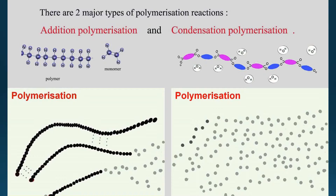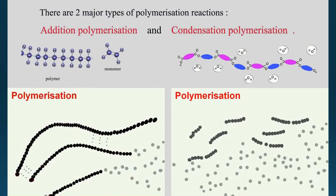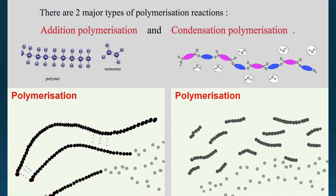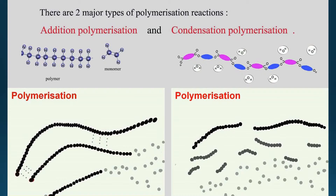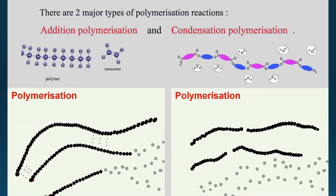In condensation polymerization, individual monomers condense together and further condense, continuing until they form a long chain of polymer. So the two types differ in how they form: one is called addition polymerization and the other is called condensation polymerization.